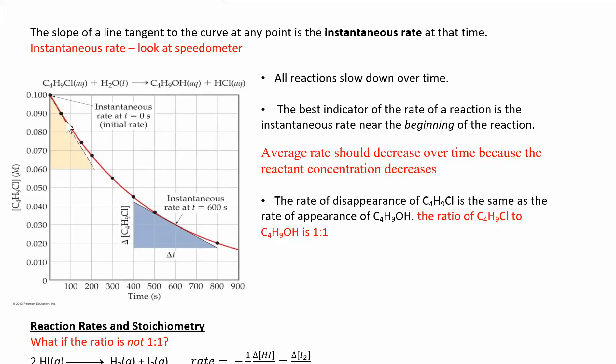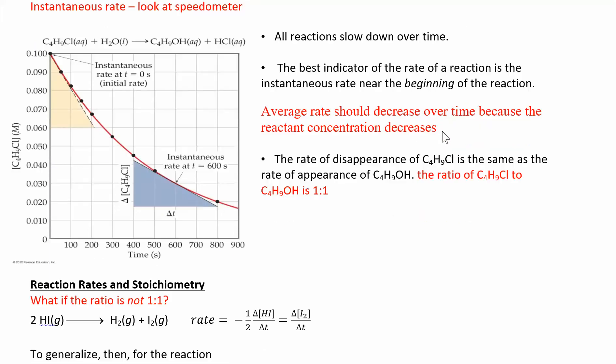I'm not going to give you a graph and make you find the tangent of any one of these points, but that's how you could find it — it's the instantaneous rate. The best indicator of the rate of reaction is the instantaneous rate near the beginning of the reaction, because all reactions are going to slow down over time. As you start using up those concentrations, the reaction rate is going to slow. So the average rate is going to decrease over time because the reactant concentration decreases.